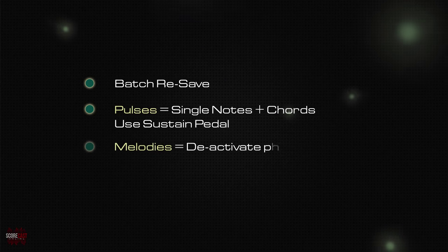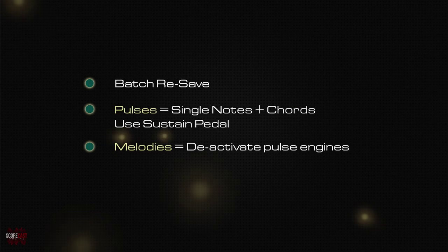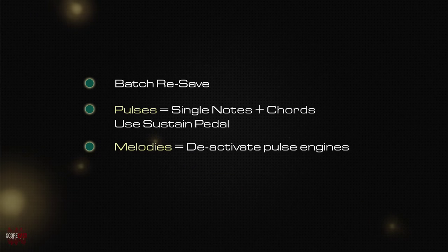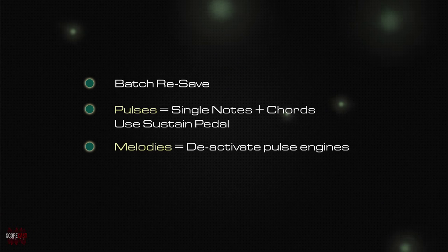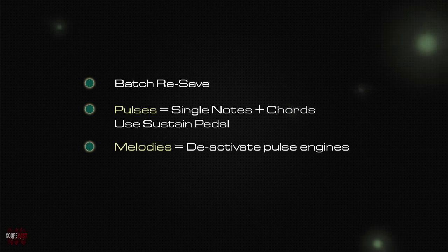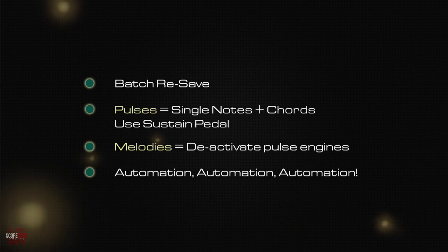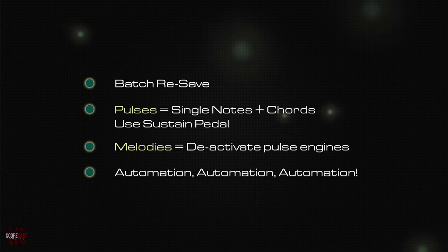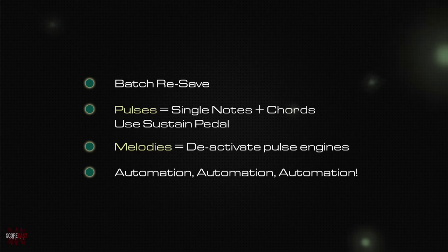If, on the other hand, you wish to use Signal as a synth for playing melodic lines, you can disable both pulse engines by clicking on the Signal logo in the middle of the interface. Even if the pulse engines have been deactivated, you can still use some of the macros and all of the on-board effects. Finally, automation is a must when using Signal. Almost everything you see on the interface is easily automatable, with first and foremost being the four macro sliders.